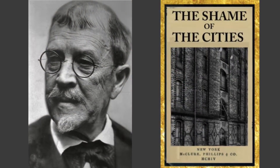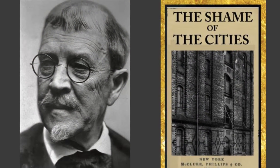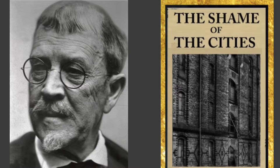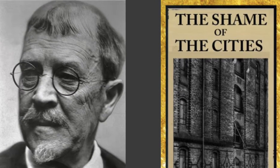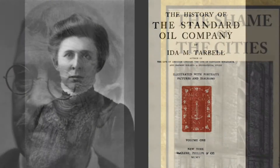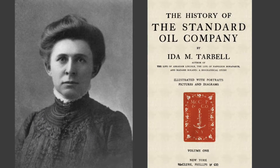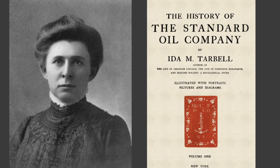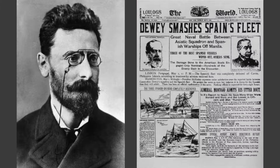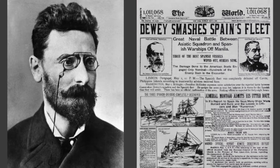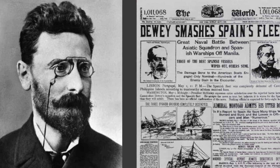Muckrakers were a crucial representation of the common people as they exposed large corruption through their writing. Famous muckrakers such as Lincoln Stephens, Ida Tarbell, and Joseph Pulitzer, and many more were able to make corruption public and force the government to administer policies and protect the people.